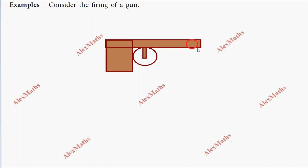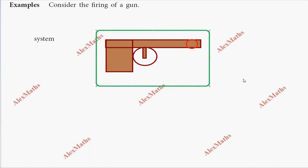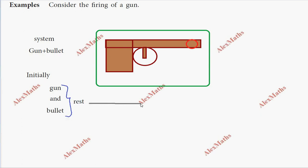We have to consider both the gun and the bullet as this system. Initially, both are at rest, so the total linear momentum of this system is zero.